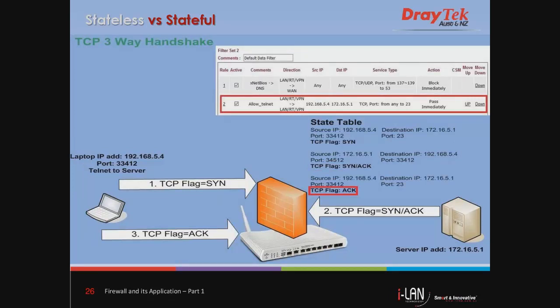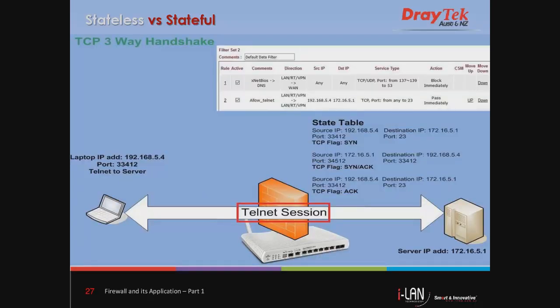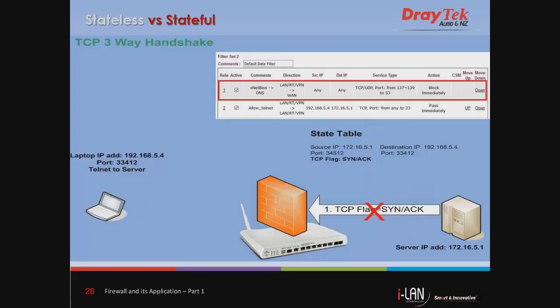Then the laptop replies with the TCP ACK flag. After the TCP three-way handshake process is done, a Telnet session is established between the laptop and the server. But what if the server sends a TCP SYN-ACK first? Because the Draytek router is a stateful firewall, it will refer to the state table. According to the state table, there was no prior TCP SYN, so the Draytek router will drop the packet.